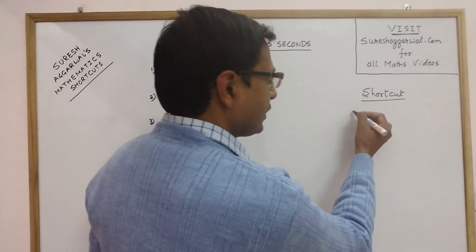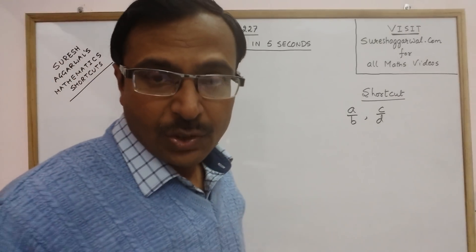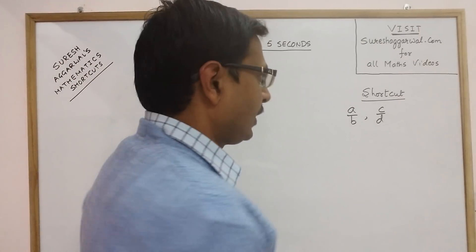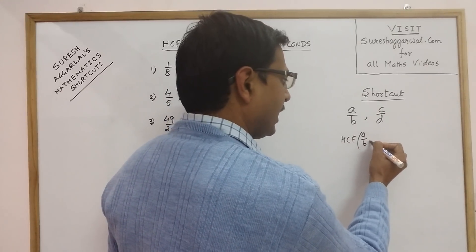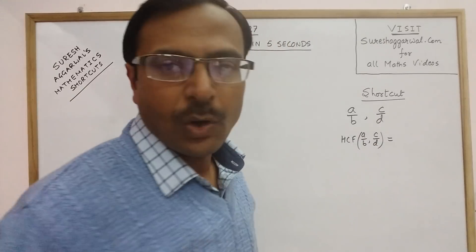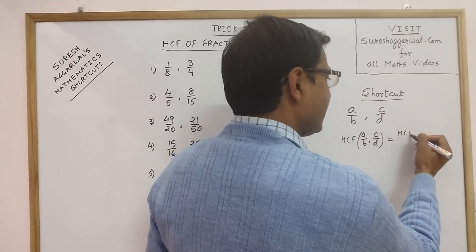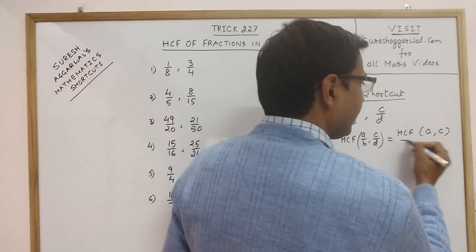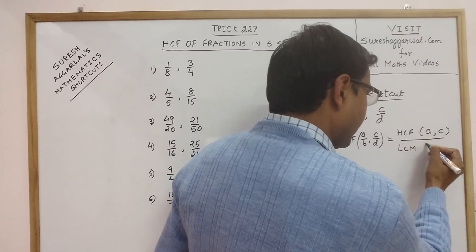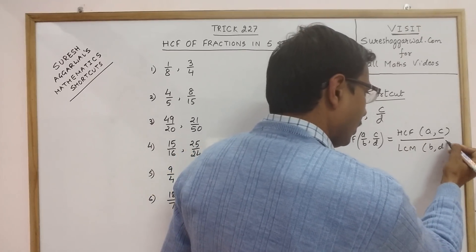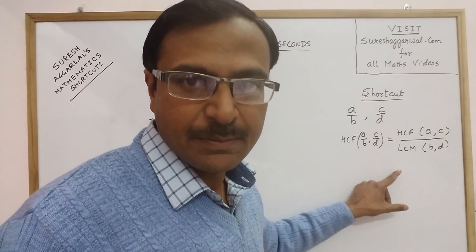To illustrate this method, I will take two general fractions: suppose a/b and c/d. The HCF of these two fractions will be obtained by finding the HCF of the numerators — HCF of a and c — divided by the LCM of the denominators — LCM of b and d. So we need to use both concepts here: HCF as well as LCM, to find the HCF of fractions.